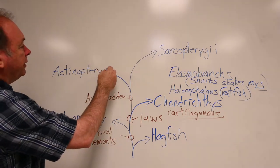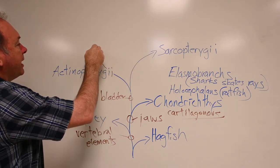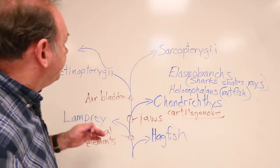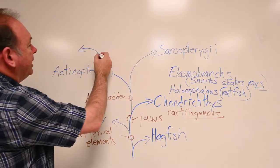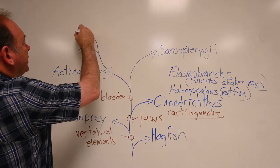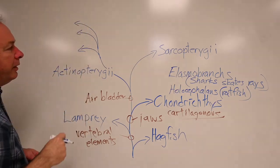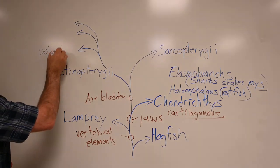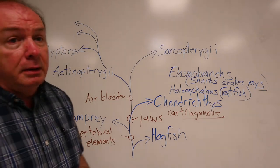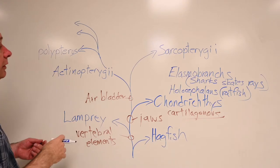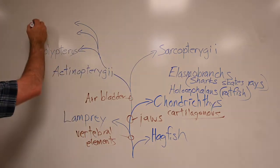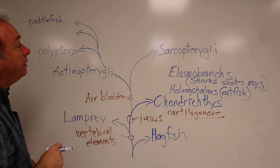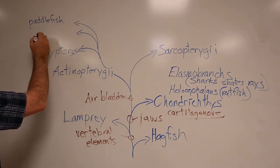Within the actinopterygians, we recognize some separate groups. The more primitive types are often referred to as chondrosteans. There are three varieties: polypterus — which is actually not that cartilaginous — and then the better known groups, the paddlefish (also known as the spoonbill or spoonbill cat) and the sturgeon.